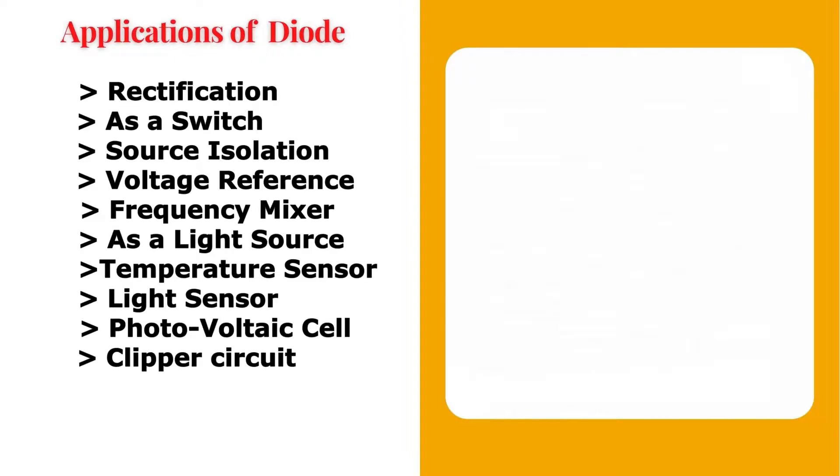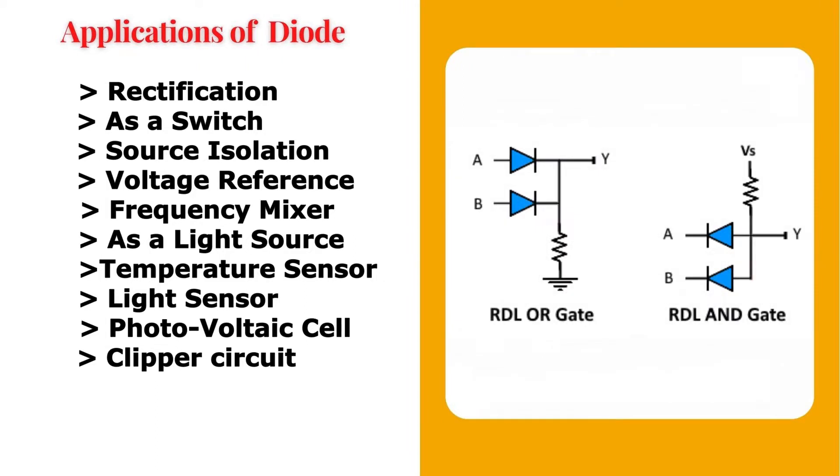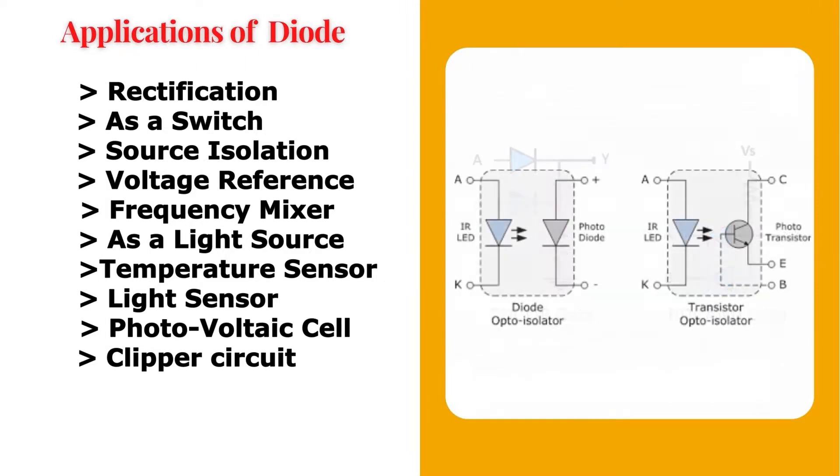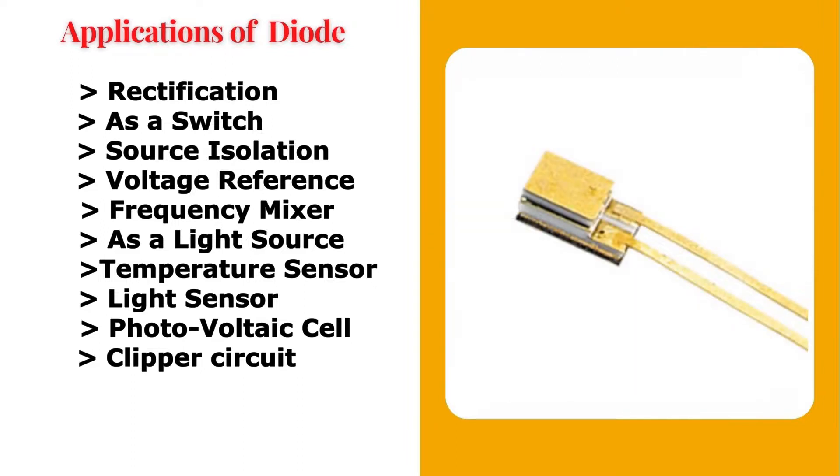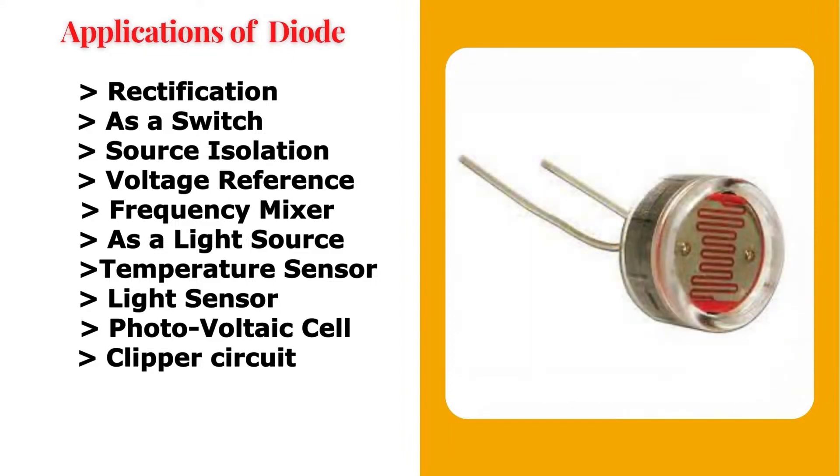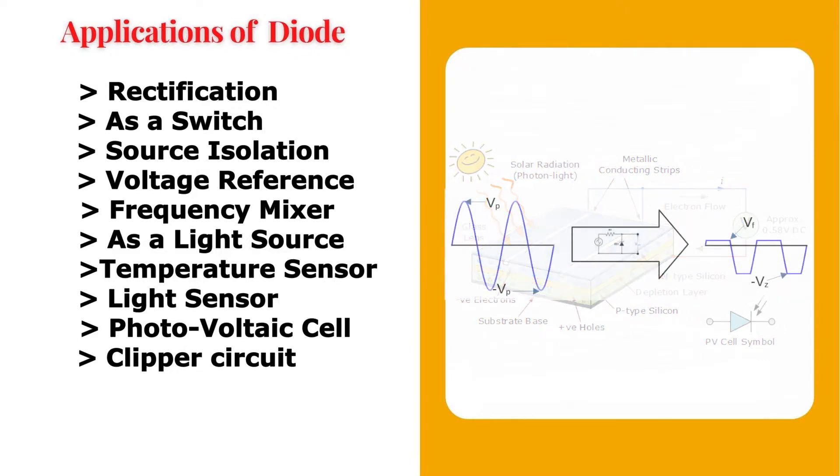Diodes have countless applications in electronics. Some of the important applications are given. The diode can be used for rectification of AC to DC, can be used in low and fast signal switching, source isolation, as a voltage reference, frequency mixer, as a light source, temperature sensor, light sensor, as photovoltaic cell in solar applications, and clipper and clamper circuits.